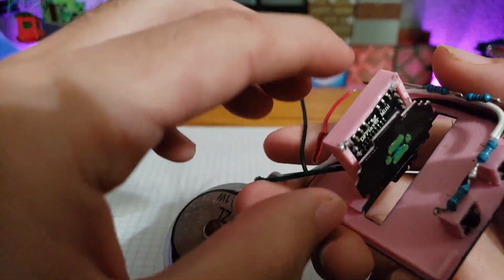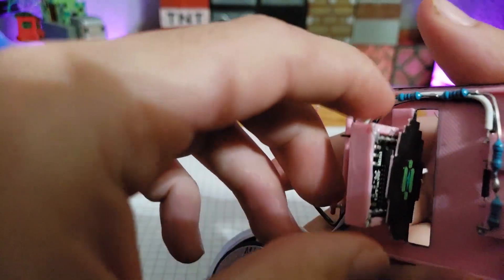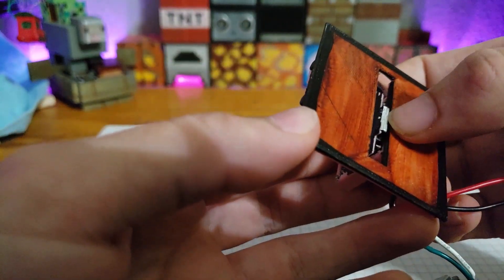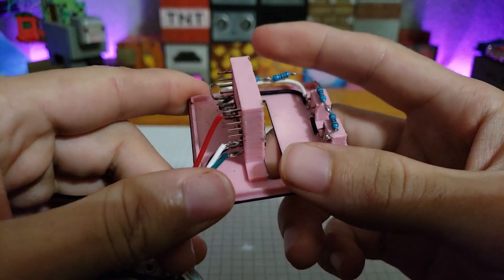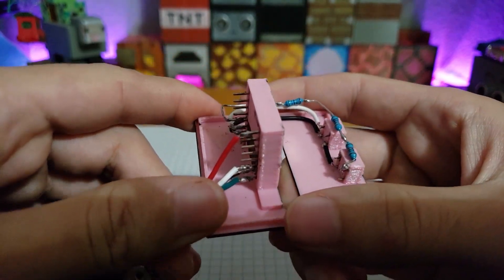The speaker is an 8 ohm, 1 watt speaker. The DF player is only capable of driving a speaker less than 3 watts. This build relies heavily on being able to solder, so make sure you have a good soldering iron.